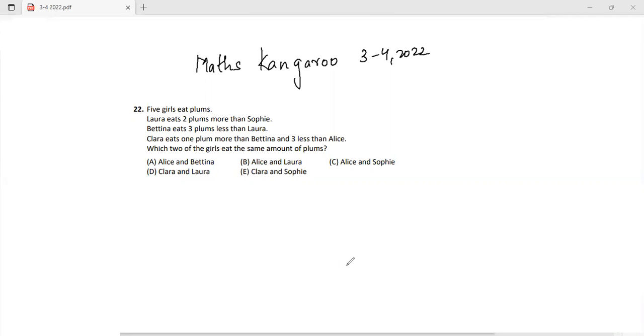Hello friends, today we will be doing Maths Kangaroo level three and four, year 2022, question number 22. Let's read the question. It says five girls eat plums. Laura eats two plums more than Sophie, Bettina eats three plums less than Laura, Clara eats one plum more than Bettina and three less than Alice. Which two of the girls eat the same amount of plums?